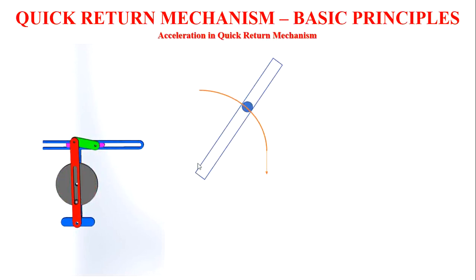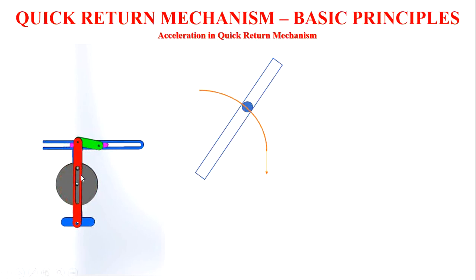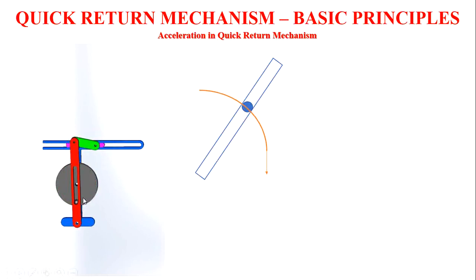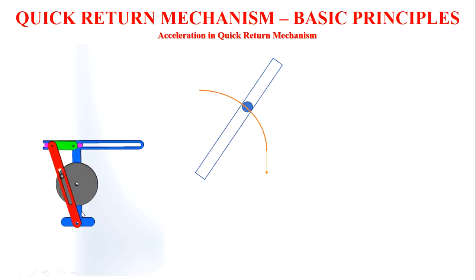Usually the acceleration will be linear for any sliding movement. In the slotted bar, this coincident point will only have a sliding moment.